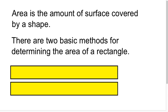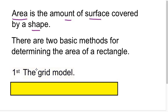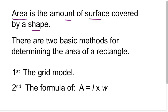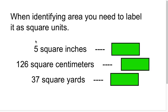The first thing we want to do is talk about what area is. Area is the amount of surface covered by a shape — it is two-dimensional. There are two basic methods for determining the area of a rectangle. Number one, the grid model, which is very good in problem solving for complicated problems. And the second method would be using the formula of length times width. Remember, area equals the length times the width if you're talking about a rectangle.